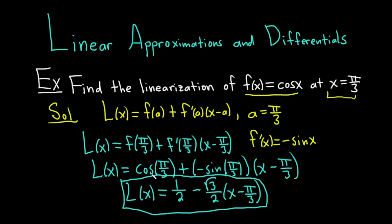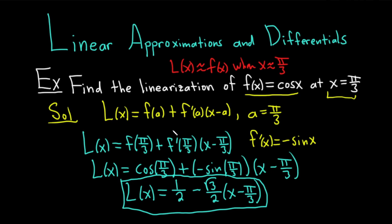Basically what this means is that L of x is approximately equal to f of x when x is close to pi over 3 — so it's an approximation. This is also called the tangent line approximation, and the first order linear approximation. So it has three names: linearization, the tangent line approximation, and the first order linear approximation.